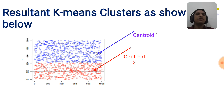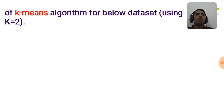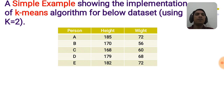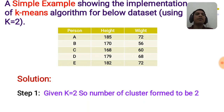The resultant k-means clusters are shown in this figure. Data points with blue color are clustered into cluster 1, whereas data points with red color are clustered into cluster 2. Now we will see a simple example showing the implementation of the k-means algorithm for a dataset having attributes height and weight.